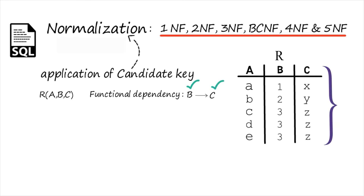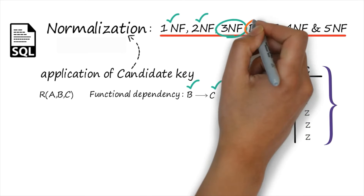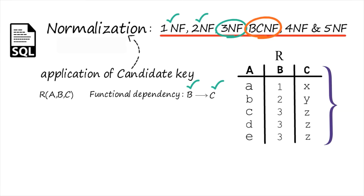Whenever a question is asked whether a particular table is normalized or not, first check whether the table is in 1NF. Then check whether it is in 2NF, and keep on checking to finally conclude which normal form your table falls under. First we have to understand whether our table is in 1NF or not.